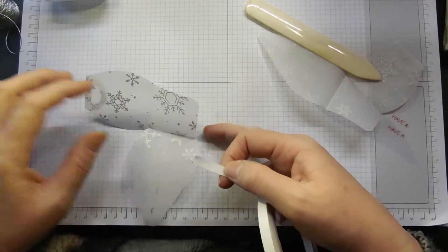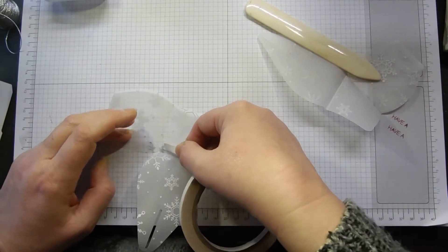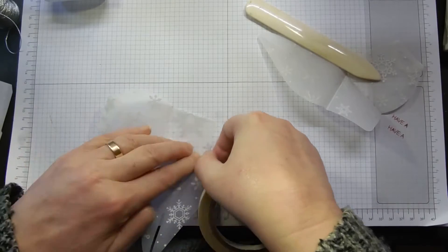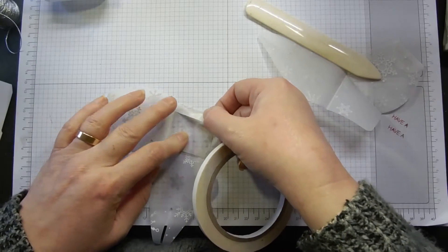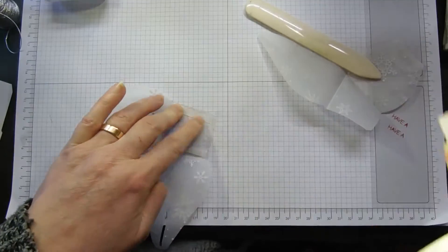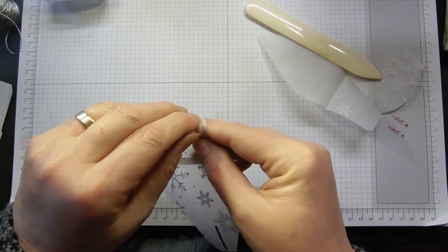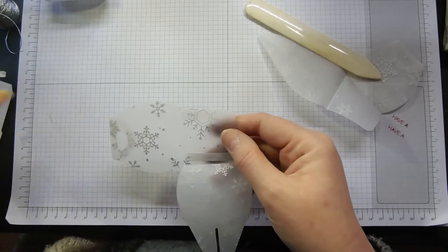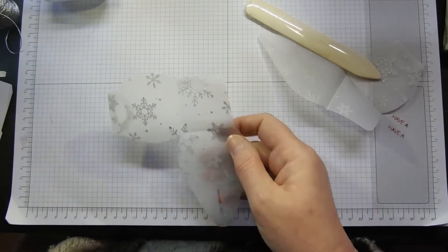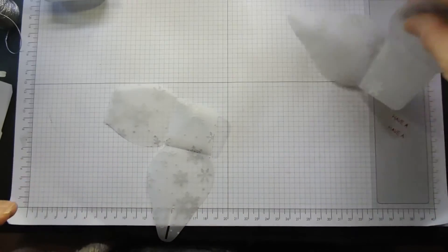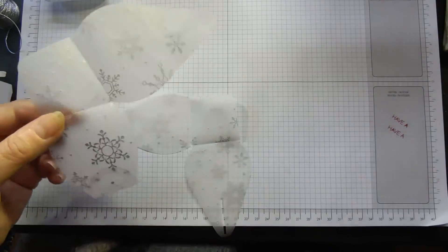You want your Tear & Tape because the only bit that you're putting adhesive on is the base piece here. I put one piece there and one piece there. You want it fairly close to the edge so that it just looks nice. Remove that tape.